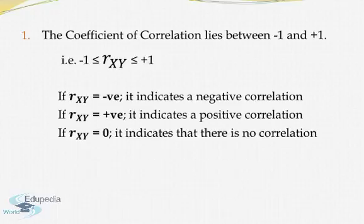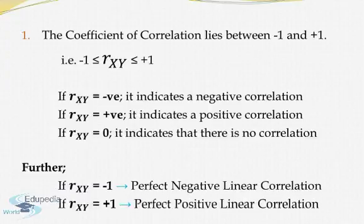If the value of r_xy is negative it indicates a negative correlation. If it happens to be positive then the correlation is positive, and if it is 0 it is an indication that there is no correlation.